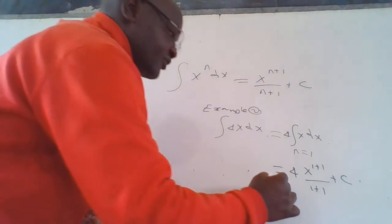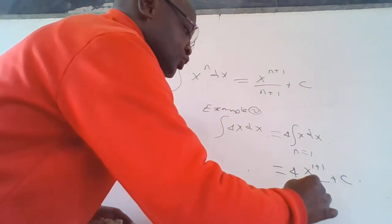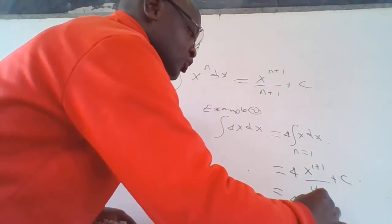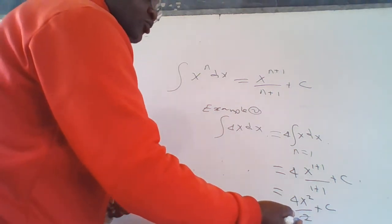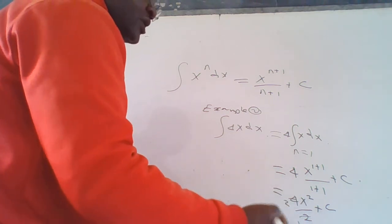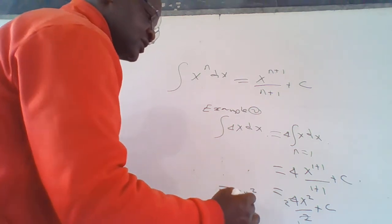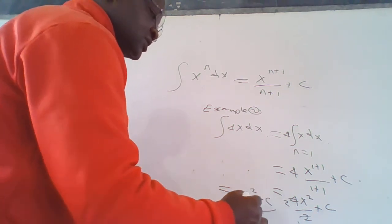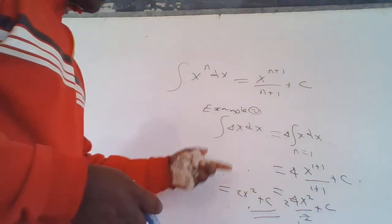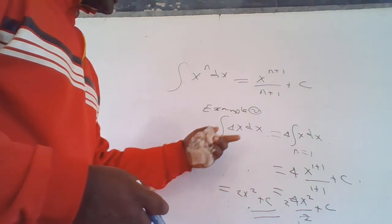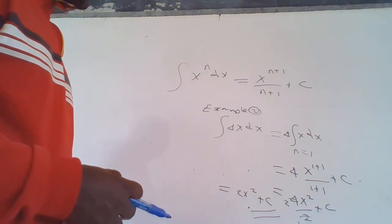Therefore, this equals 4 times x raised to 2 over 2, plus the constant. The 4 over 2 simplifies to 2, so this equals 2x squared plus the constant of integration. So when you integrate 4x dx, you get 2x squared plus a constant.